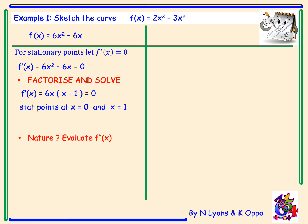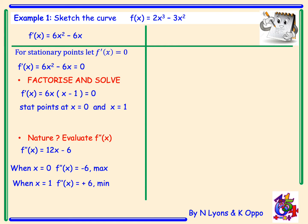For the nature we'll use the second derivative. Our second derivative is 12x - 6. When x = 0, the second derivative equals -6, therefore this must be a maximum turning point. When x = 1, the second derivative is +6, which means this must be a minimum turning point, which was as expected.